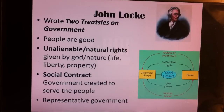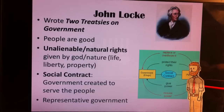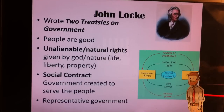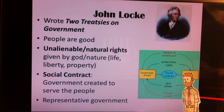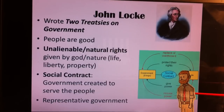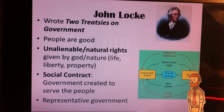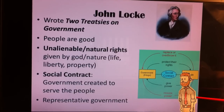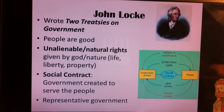One of the guys that got Enlightenment really going was John Locke. He wrote a book called Two Treatises of Government. He believed that people were naturally good, and that people had natural or unalienable rights given to them by God or nature, such as life, liberty, and property. Since people were naturally good, they could actually participate in government and didn't need absolute control over them. He also came up with the idea of a social contract — that the government was created to serve the people, rather than the people serving the government — and he believed in a representative democracy, where people vote on representatives to represent them in government.